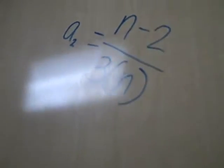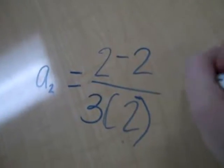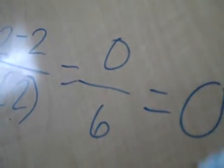For a sub 2, you do the same thing but plug in 2 for n. So you have 2 minus 2 and 3 times 2. 2 minus 2 equals 0, and 3 times 2 is 6. 0 divided by 6 equals 0. So the answer for a sub 2 is 0.